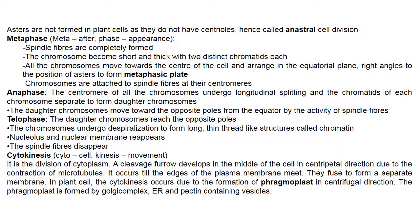In anaphase, the centromeres of all chromosomes undergo longitudinal splitting and the chromatids of each chromosome separate to form daughter chromosomes. These move towards opposite poles by the activity of spindle fibers. In telophase, the daughter chromosomes reach opposite poles and undergo despiralization to form long thin thread-like structures called chromatin. The nucleolus and nuclear membrane reappear, and spindle fibers disappear.